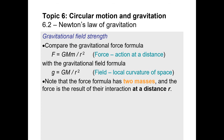Comparing the two formulas: the universal law of gravitation involves two masses, while the gravitational field strength formula only involves one. Just like for electric fields — you only need one charge or one mass to create the field. For there to be a force, there must be a second mass to experience the field. That's where the force formulas come into play.